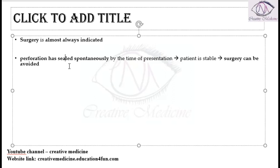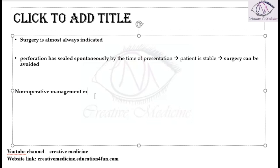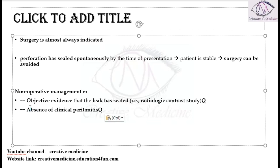If surgery can be avoided, what is the non-operative management that can be given? Non-operative management is given whenever the patient has no leak on the radiological study, or if the patient has no chemical peritonitis — meaning there is evidence that the leak has sealed. When the perforation is sealed, the patient is stable and everything is normal, so surgery is not needed. Non-operative management is also appropriate when clinical peritonitis is not present.